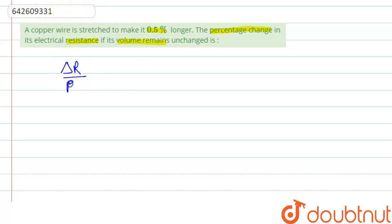ΔR/R × 100. This we have to find out. And in the question, it is given that ΔL/L × 100 = 0.5%, and the volume is constant. So for this case...